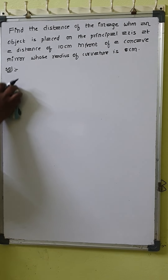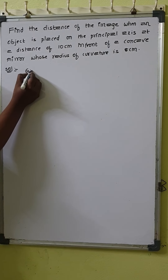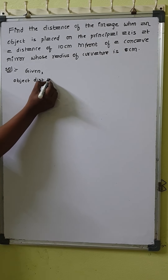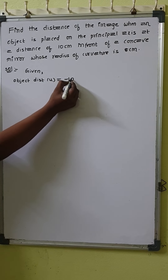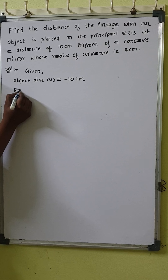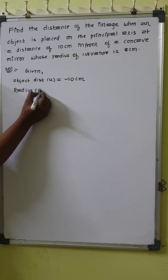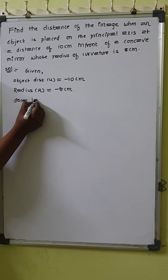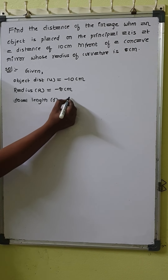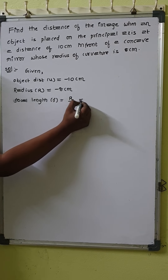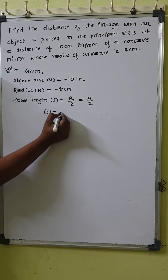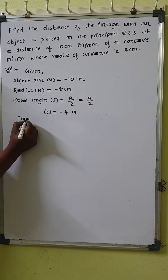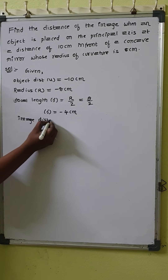Given values: object distance u = 10 cm, but according to sign convention it is minus 10 centimeters. Radius of curvature R = 8 cm, so according to sign convention it is minus 8 centimeters. Focal length f = R/2 = 8/2 = 4 cm, so according to sign convention f = minus 4 centimeters. We have to find image distance v.